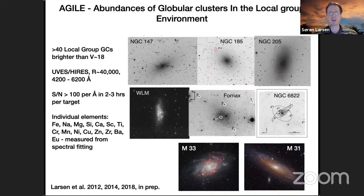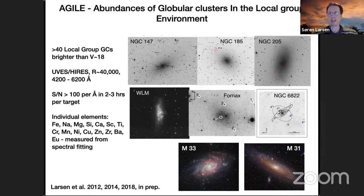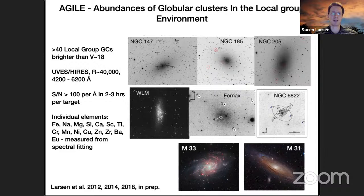The measurements shown so far are mostly for individual stars in the Milky Way and a few nearby galaxies. When you go to more distant galaxies it becomes much more challenging to derive detailed abundances. You can do something with integrated galaxy light even at relatively low spectral resolution, but the problem is that you lose information — you have some mix of stellar populations with potentially different ages and compositions — making it harder to interpret.